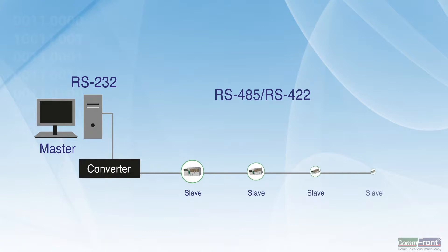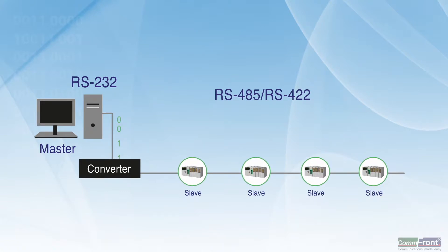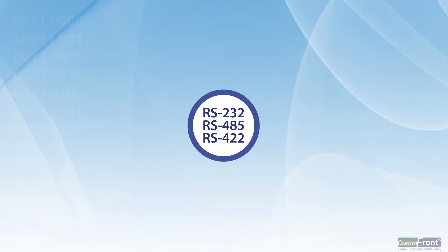Industrial communication systems, such as RS-485 and RS-422, often require data transmission between multiple devices over long distances. While having multiple devices communicating with each other on the same twisted pair cable is robust and cost-effective, it also introduces two major challenges.